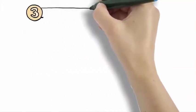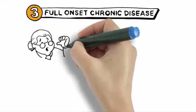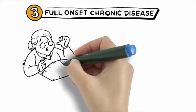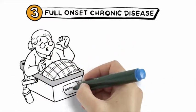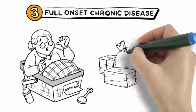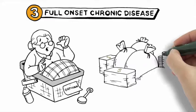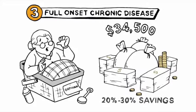Now the third population cohort is the subset of patients with full-onset chronic disease. The orphan of traditional managed care, this group has been virtually unmanaged through 40 years of population health. These patients spend over eight times as much as the early-onset cohort, averaging over $34,500 per person per year, with 20-30% savings opportunities if avoidable variation in treatment is reduced.